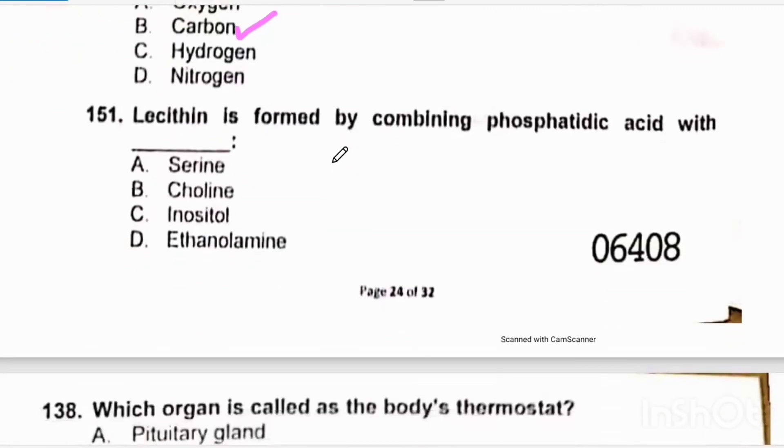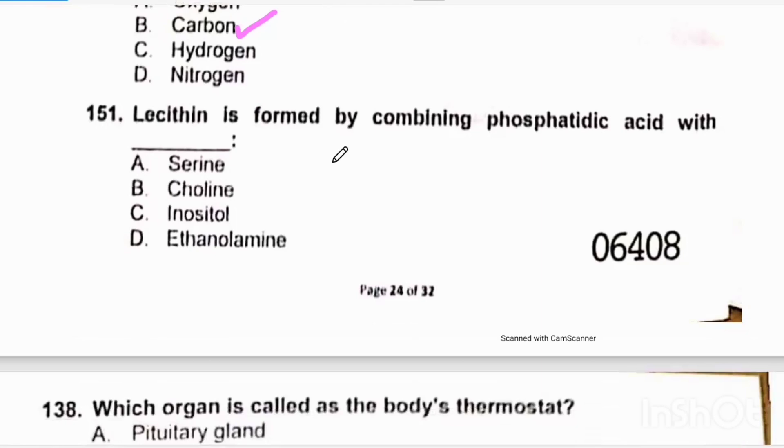Lecithin is formed by combining phosphatidic acid with choline. Lecithin is another name for phosphatidylcholine. Phosphatidic acid combines with choline, and the resulting compound formed is phosphatidylcholine or lecithin. So correct option will be beta.